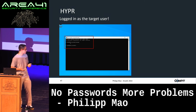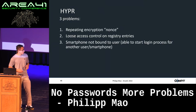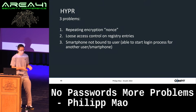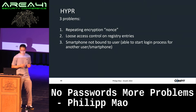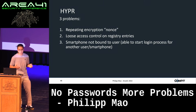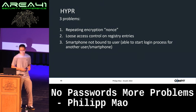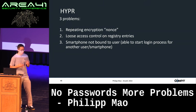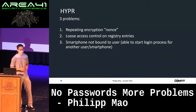There are three problems here: first, the repeating encryption nonce isn't truly random — if it were never-repeating, reusing the encrypted certificate would be very difficult; second, the registry entries should only be readable by the user they belong to; third, the attacker can use their own biometrics to start a login flow for another user, though that's harder to fix. Steps one and two are now fixed in the newest Hyper version.